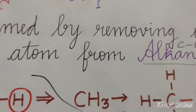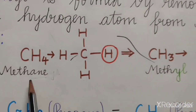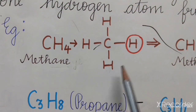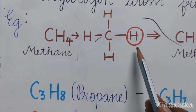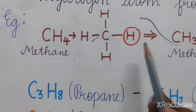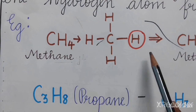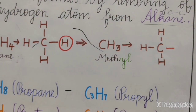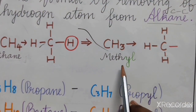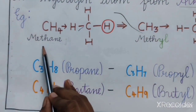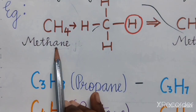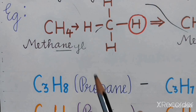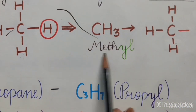Let's understand this with an example. Methane is an alkane and methane has four hydrogens. If we remove one hydrogen, it becomes incomplete. Since there is one incomplete bond, it is an alkyl. The name of this alkyl is methyl. In methane, if we remove 'ane' and replace it with 'yl', it gives us the alkyl term methyl.